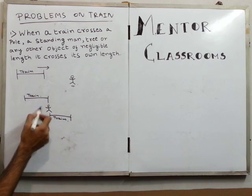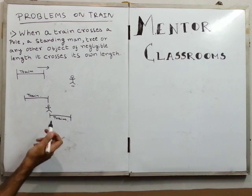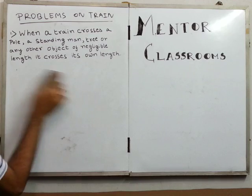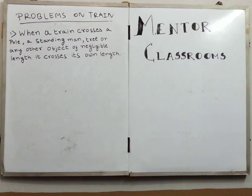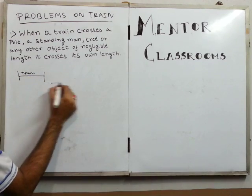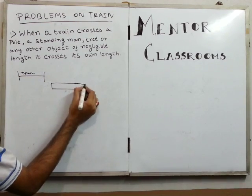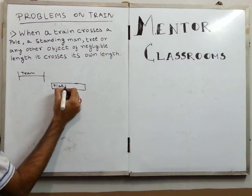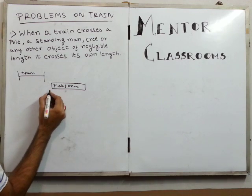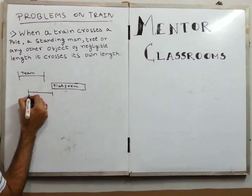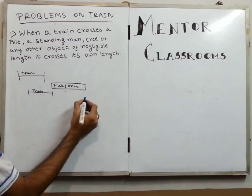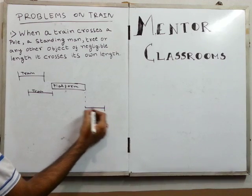Now, if in place of this man there is a platform — this is our train and this is our platform — similarly the train approaches towards the platform. At this point the train starts crossing the platform.